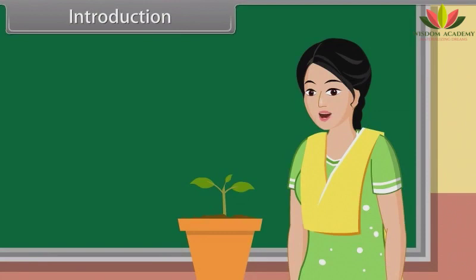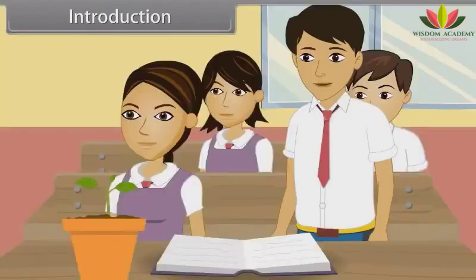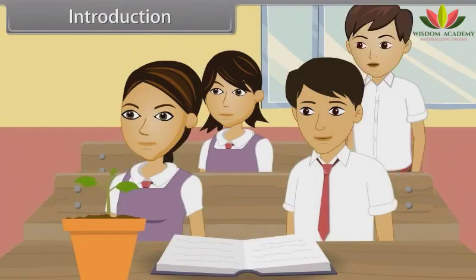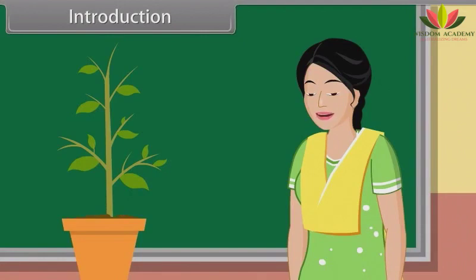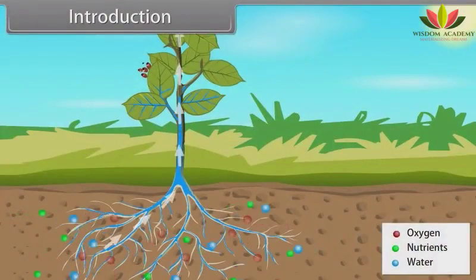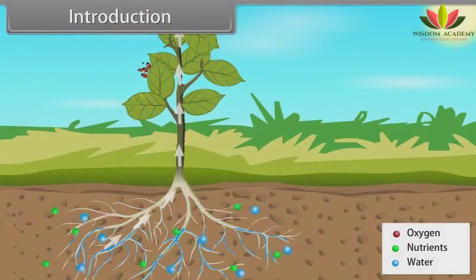Who will tell me what is growth in plants? Ma'am, increase in the size of the cell and elongation in them signifies the growth of plant. Very good, Suresh. Ma'am, can we measure the growth of plants? Good question, Rahul. Yes, we can. The growth of a plant can be measured by considering various factors such as nutrients availability, water availability, oxygen, etc.